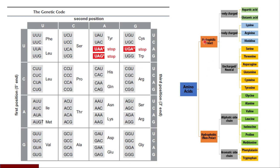If the polar amino acid is negatively charged, the examples are aspartic acid and glutamic acid — these are acidic amino acids. If it is positively charged: lysine, arginine, histidine — these are basic amino acids. If the amino acid is polar but neutral or uncharged, those are amino acids with hydroxyl groups — serine, threonine — then asparagine, glutamine, cysteine, and tyrosine.